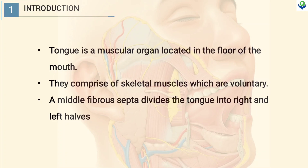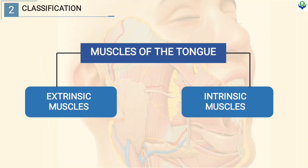Tongue is a muscular organ located in the floor of the mouth. They comprise of skeletal muscles which are voluntary. A middle fibrous septa divides the tongue into right and left halves. The muscles of the tongue are broadly classified into extrinsic muscles and intrinsic muscles.